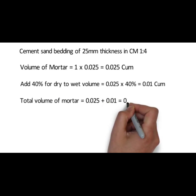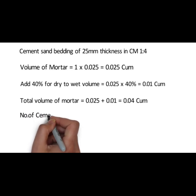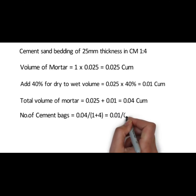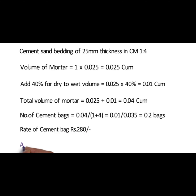Total volume of mortar shall be 0.025 plus 0.01 equals 0.04 cubic meter. Now we will calculate the number of cement bags. The formula is 0.04 divided by (1 plus 4) equals 0.01 cubic meter. Since 1 is to 4 is the proportion, the cement part is 1 divided by 5. The volume of one bag of cement is 0.035 cubic meter, so dividing 0.01 by 0.035 gives 0.2 bags. At a rate of 280 rupees per bag, the amount of cement required is 0.2 into 280 equals 56 rupees.